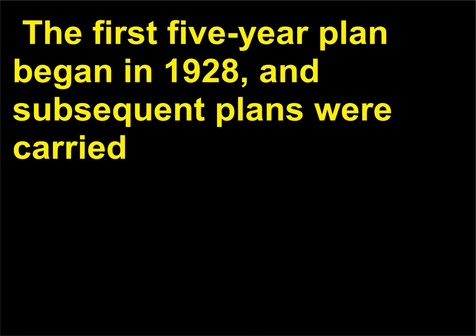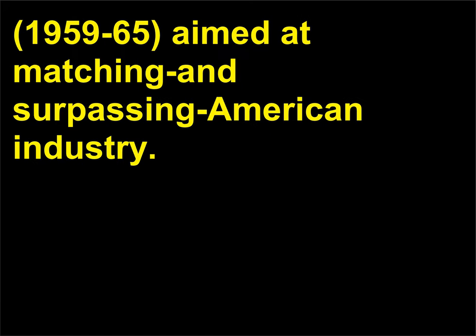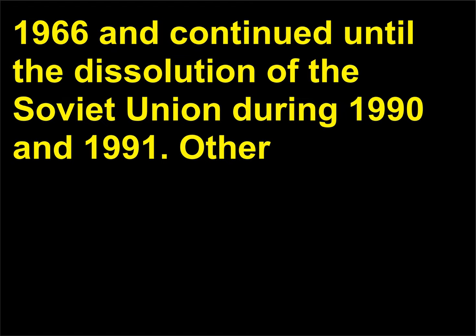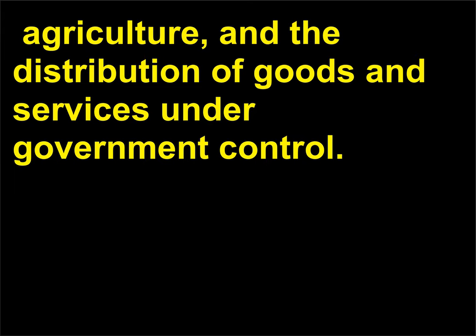The first five-year plan began in 1928, and subsequent plans were carried out until 1958, at which time the new Soviet leadership developed a seven-year plan, 1959–65, aimed at matching and surpassing American industry. Under Premier Leonid Brezhnev, 1906–1982, the five-year plans were reinstated in 1966 and continued until the dissolution of the Soviet Union during 1990 and 1991. Other Communist countries also instituted five-year plans, all with the goal of bringing industry, agriculture, and the distribution of goods and services under government control.